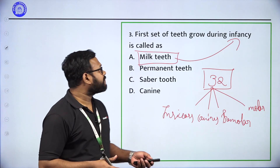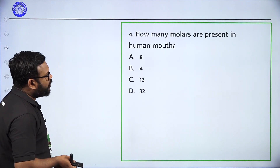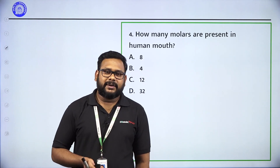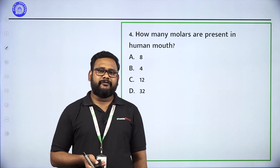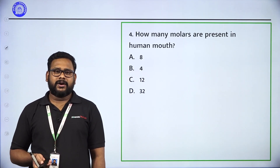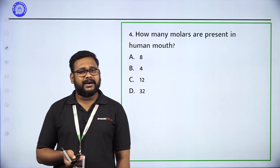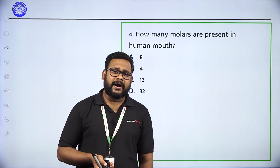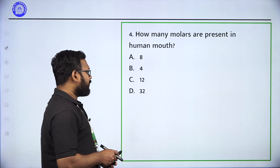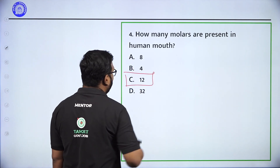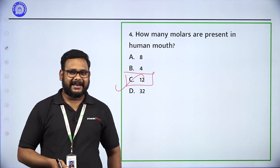Next question: How many molars are present in the human mouth? Options: 8, 4, 12, 32. In one quarter of the mouth we have three molars. There are four quarters in the human mouth, so three into four equals twelve. How many molars are present in the human mouth? That is twelve — option C.